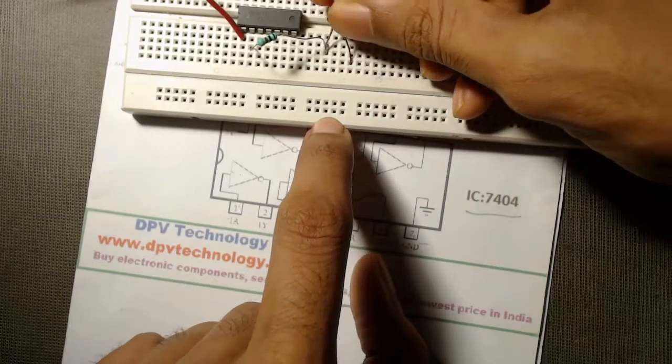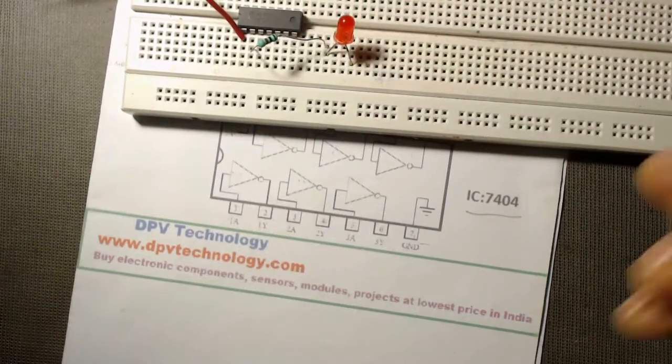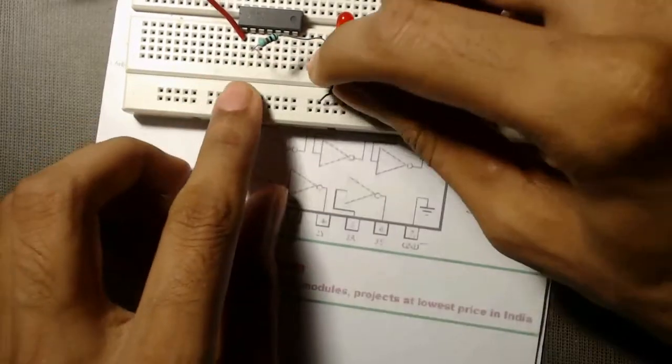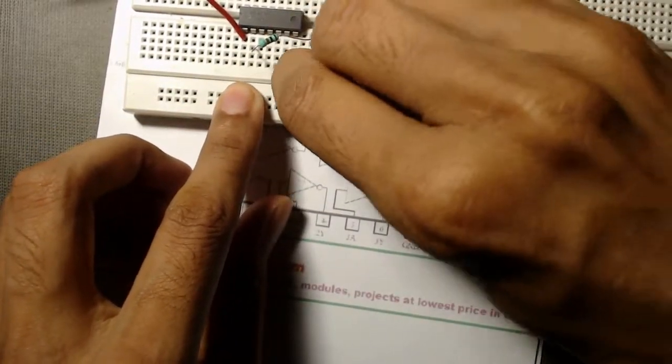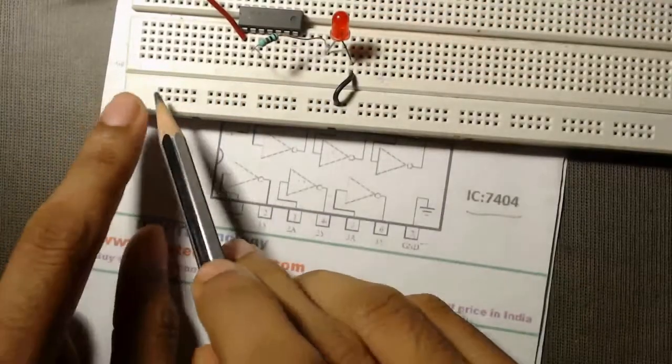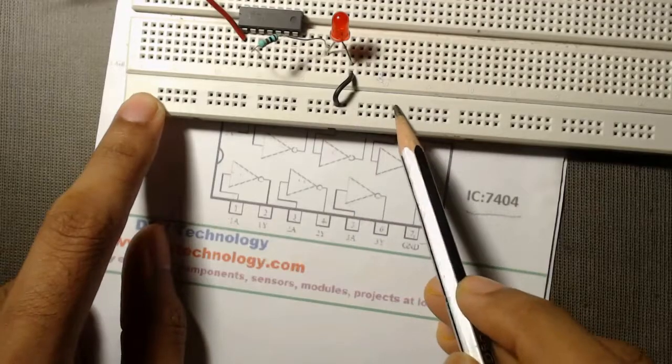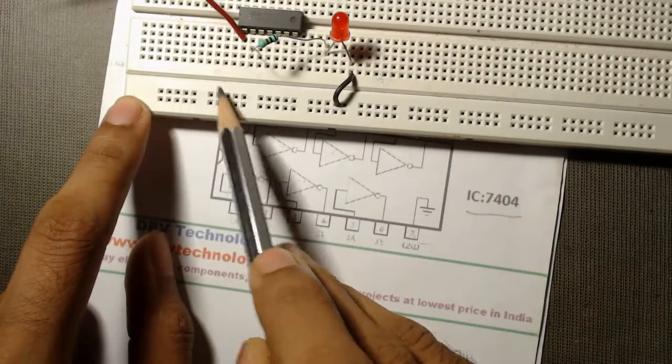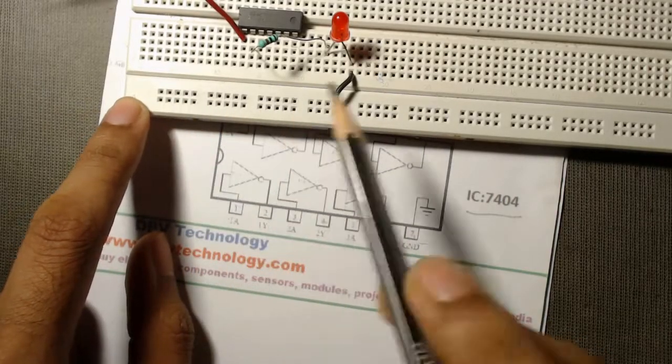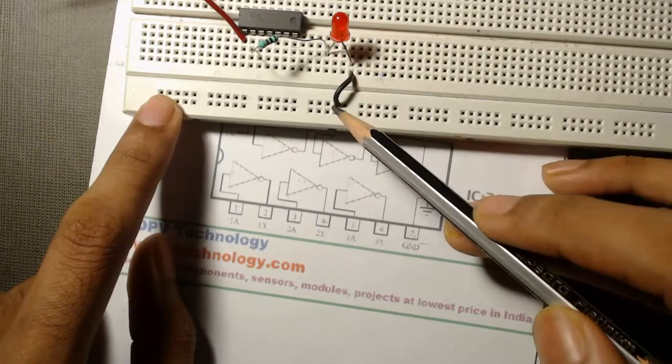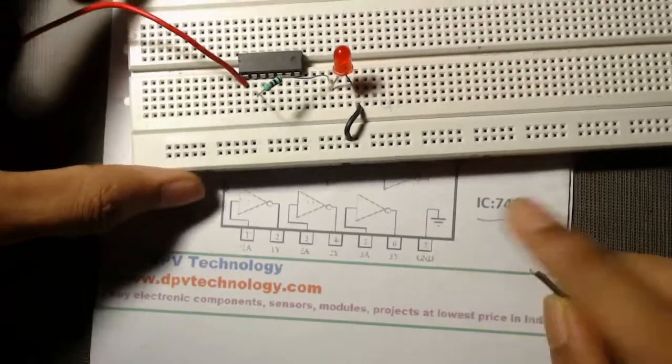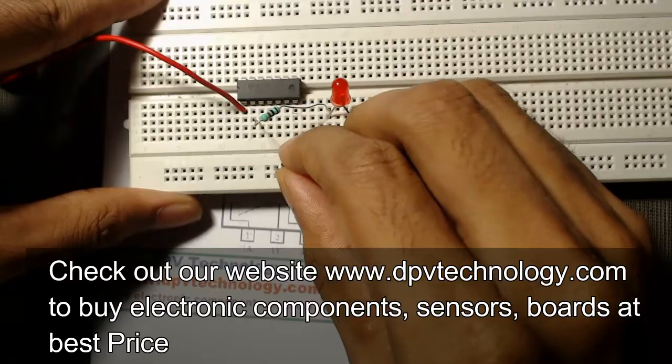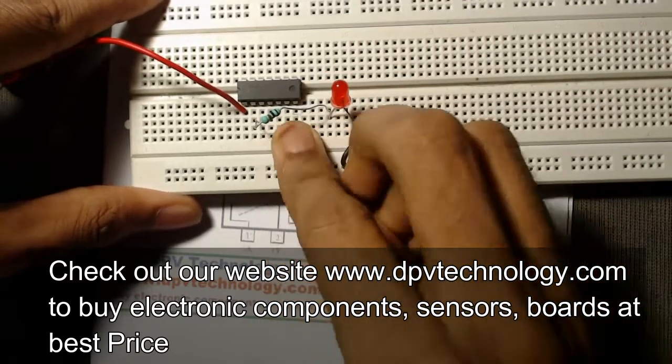Then we have to connect the negative terminal of our LED to ground. We will consider this row as ground, that means we will connect the negative terminal of our battery to any point of this row. That is why we have connected it to ground. Then we will connect this pin number 7 to ground, to any point of this row.